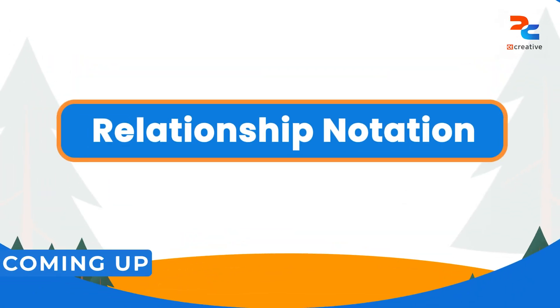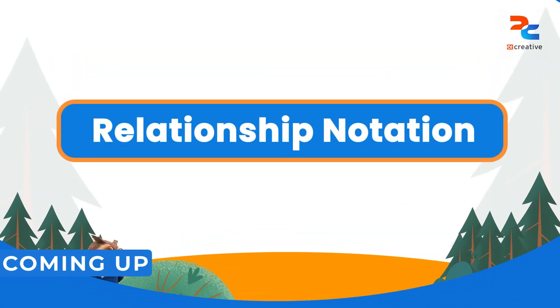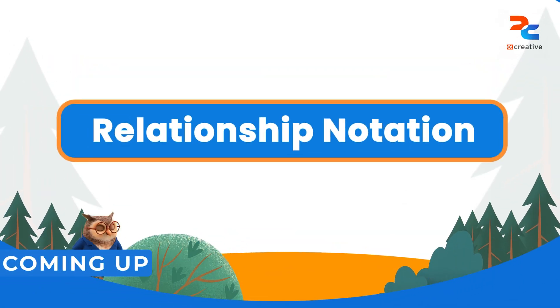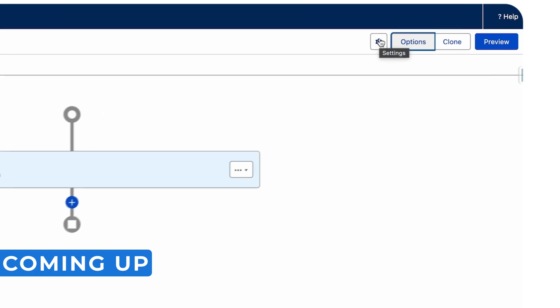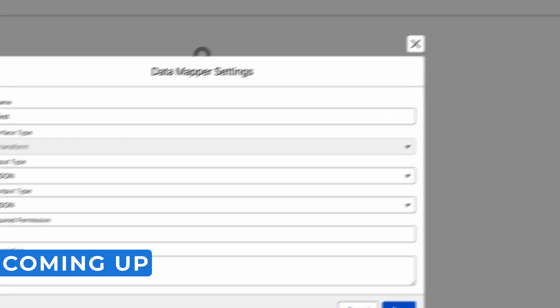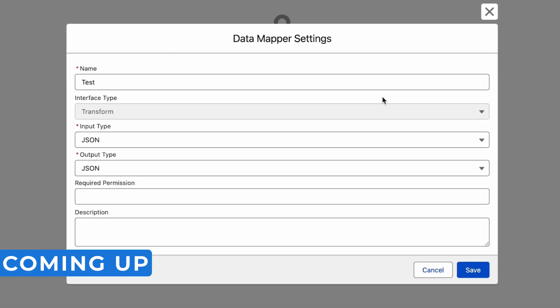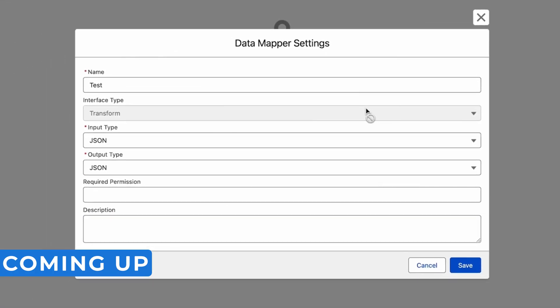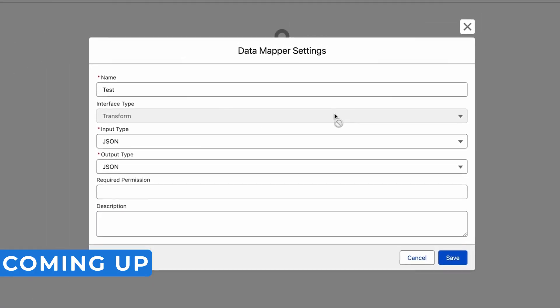What is a data mapper? Use relationship notation instead of multiple extract steps. In the data mapper's options tab, you can set the Salesforce platform cache type to OR cache.